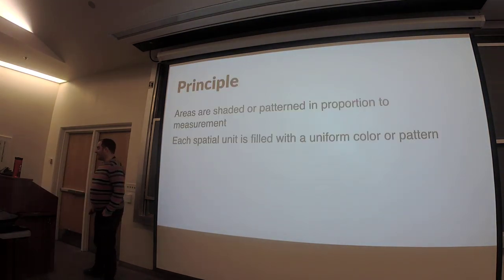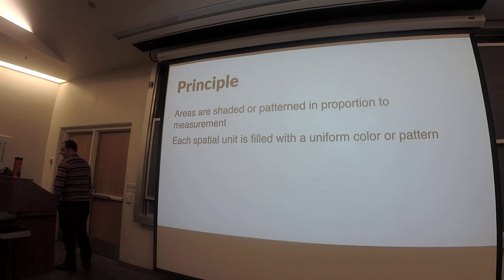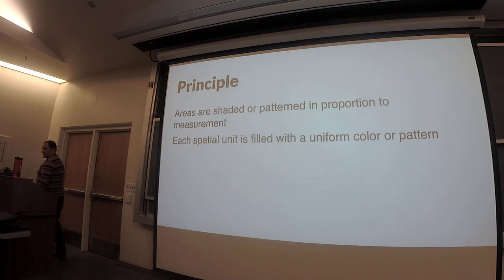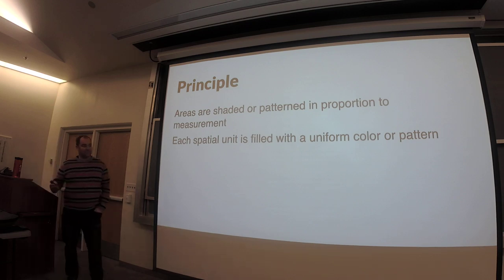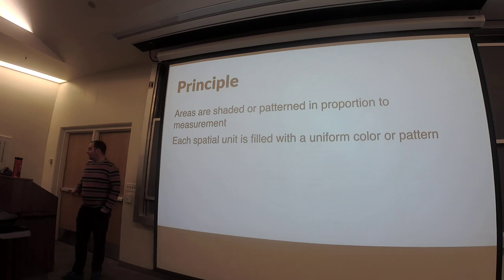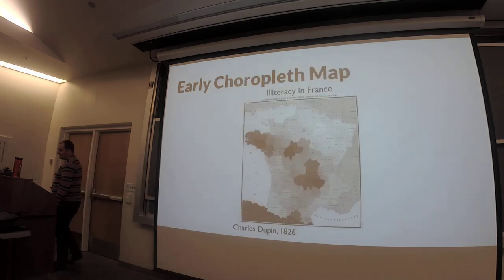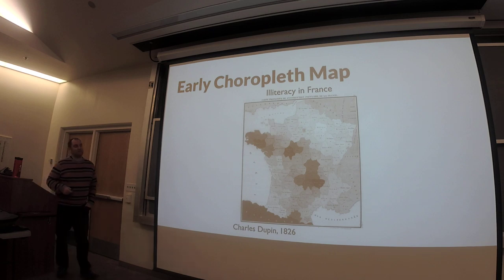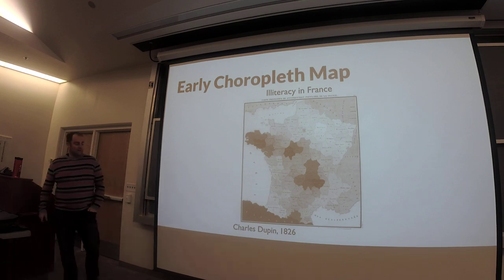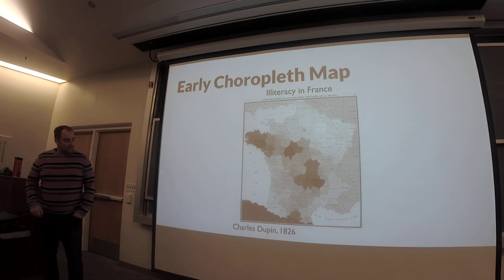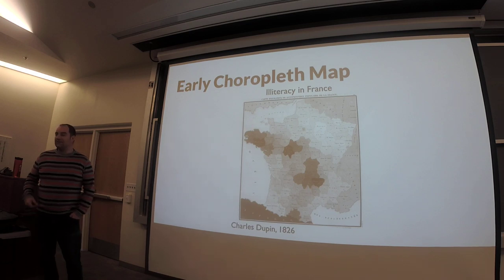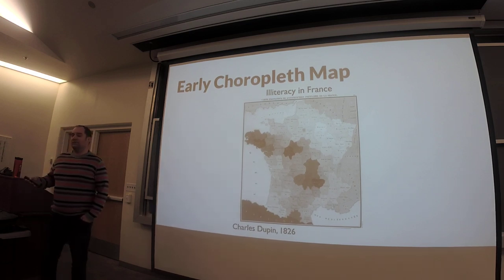So what are choropleth maps? The principle here is that areas are shaded or patterned in proportion to some kind of measurement or data. Each spatial unit is filled with a uniform color or pattern. Here is an early example about literacy or illiteracy in France — in districts in France from 1826. So this was fairly common early on, and it's an easy way to do that.